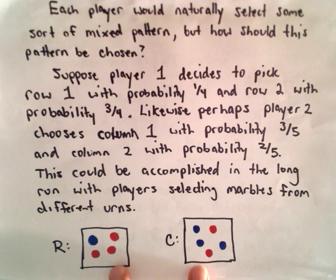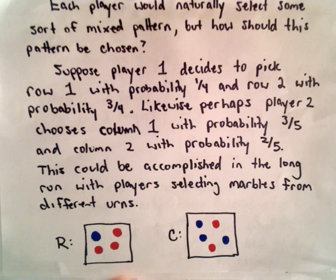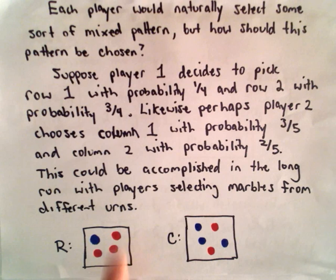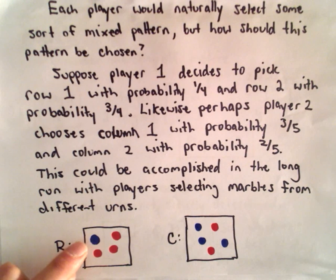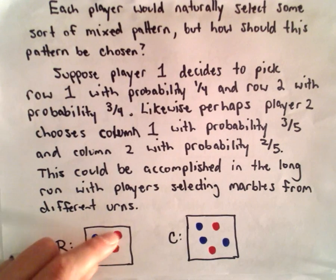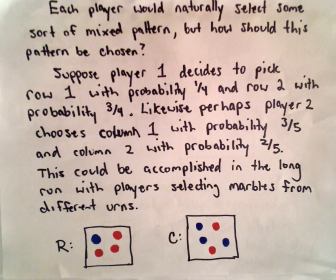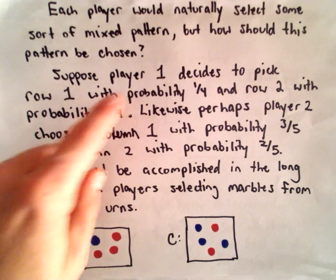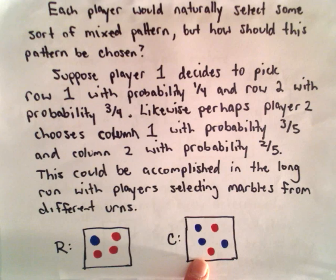Well, one way to do it would be to simply have two different urns. So maybe player R has an urn with four marbles in it, one blue and three red. And maybe if they pick the blue marble, that's going to correspond to choosing row one. And if they pick a red marble, that'll correspond to choosing row two. And again, after every, so you pick a marble that tells you what row to play. You put the marble back in. And you can keep repeating this random process over and over and over. And that's going to give you the long-run probability.